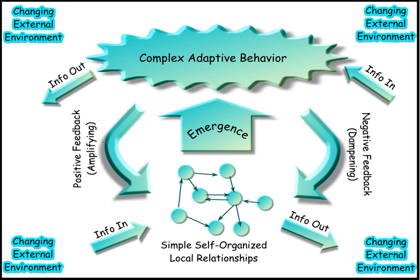A biological system is a complex network of biologically relevant entities. Biological organization spans several scales. Examples of biological systems at the macro scale are populations of organisms. On the organ and tissue scale in mammals and other animals, examples include the circulatory system, the respiratory system, and the nervous system. On the micro to the nanoscopic scale, examples of biological systems are cells, organelles, macromolecular complexes and regulatory pathways. A biological system is not to be confused with a living system, such as a living organism.